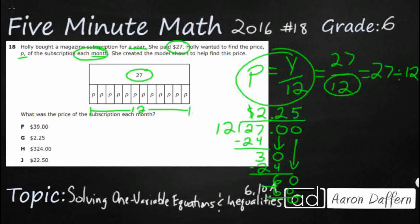And if you really wanted to, you can multiply 2.25 back by 12, and you would get $27. So that is our answer. If you take 2.25 and write it 12 different times — add all that up, repeated addition — it is going to get you your $27.